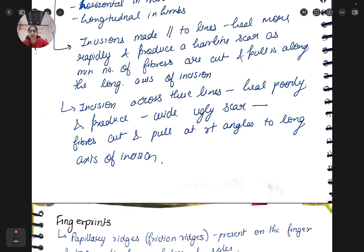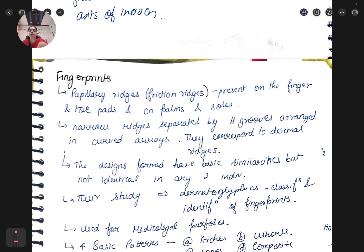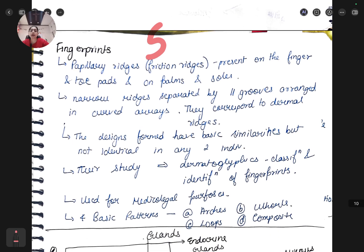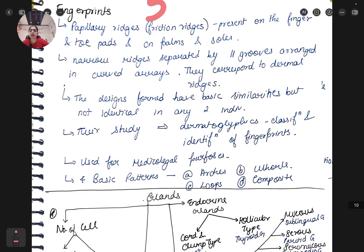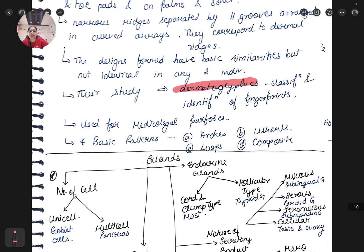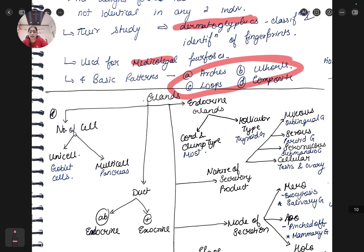Fingerprints - this is also a five mark question. Papillary ridges or friction ridges present on finger and toe pads, on palms and sole. They are narrow ridges separated by parallel grooves. The designs formed have basic similarities but are not identical in any two individuals. There are studies known as dermatoglyphics. Classification and identification of fingerprints used for medical legal purposes. Four basic patterns are there - arcs, loops, whorls and composite.